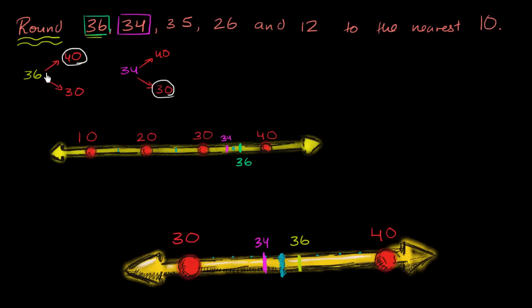Notice we went to 30. You might say, when we rounded up, the tens place increased from 3 to 4, from 30 to 40. But when we round down, 30 is the multiple of 10 below 34. So you keep the tens digit, and the ones place just becomes a 0.